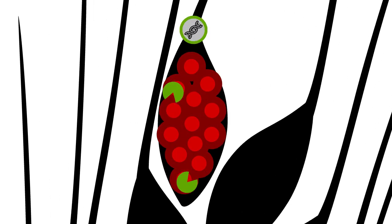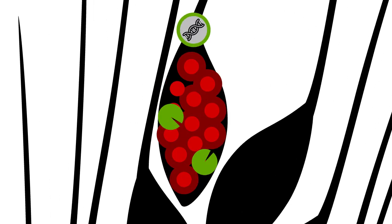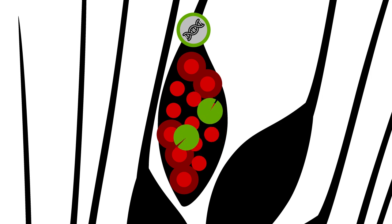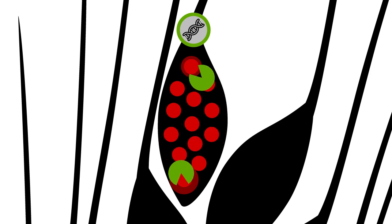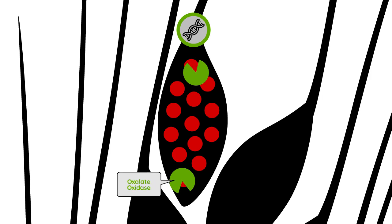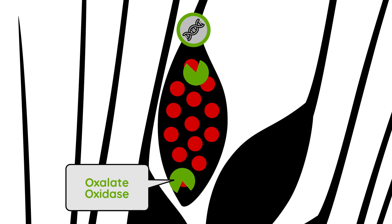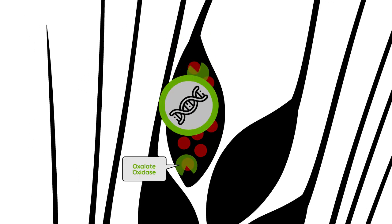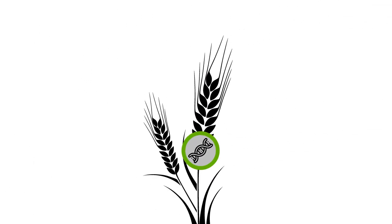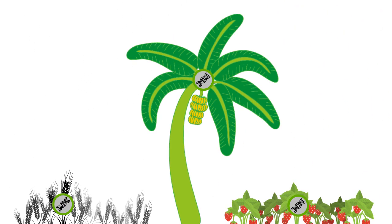Because so many plant pathogens use oxalic acid, many plant species have evolved a mechanism to protect themselves from this acid. One such defense gene produces an enzyme called oxalate oxidase, which removes the acid without harming the pathogen. This gene is used by many plants, including wheat, bananas, and strawberries.